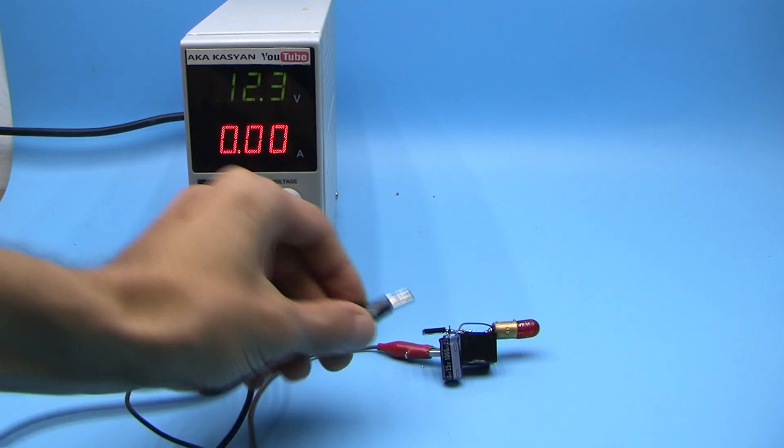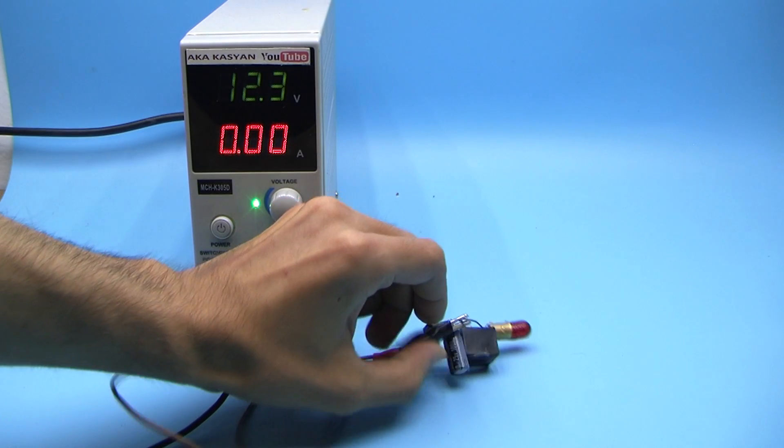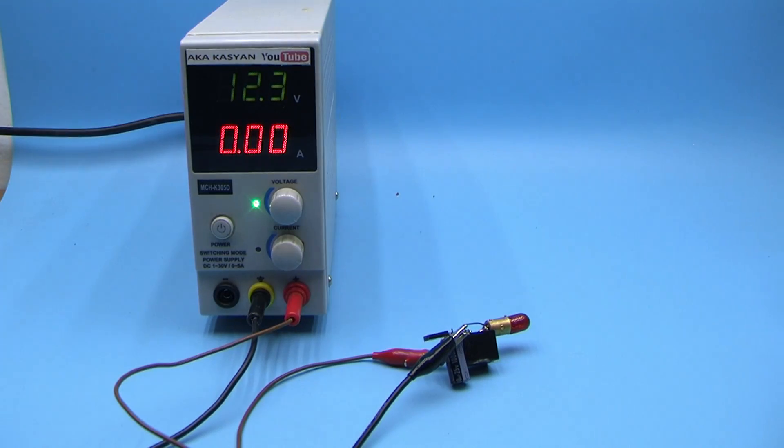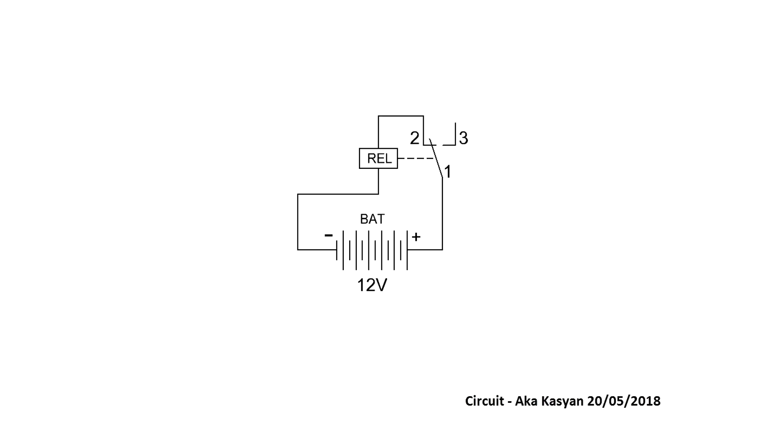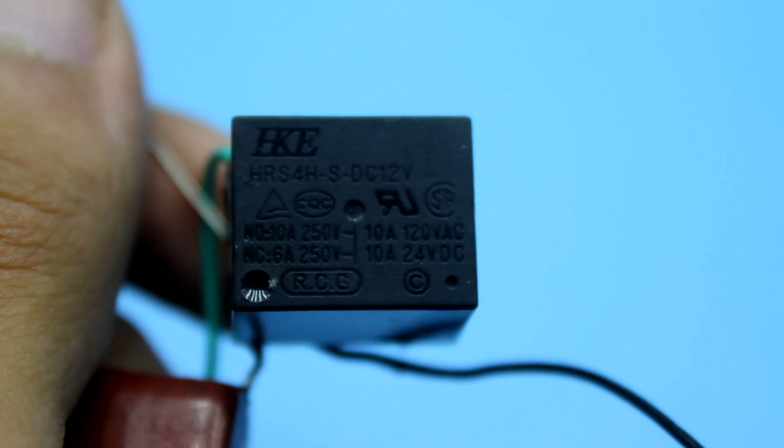The delay time depends on the value of the capacitor and resistor. The greater the capacitance and resistance, the greater the delay and vice versa. Here is the following circuit. It may seem that I forgot to draw some components, but apart from the relay, we don't need anything else.